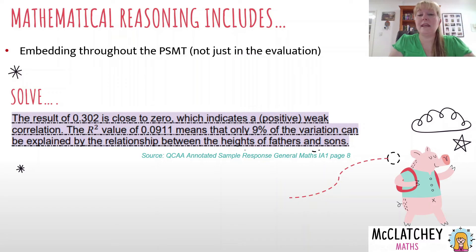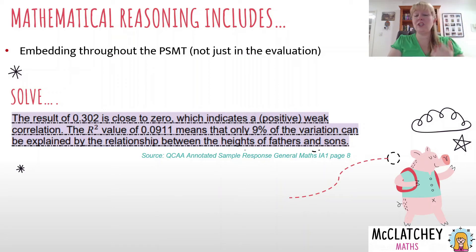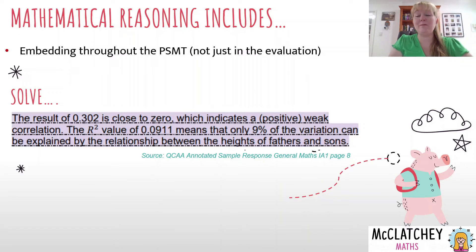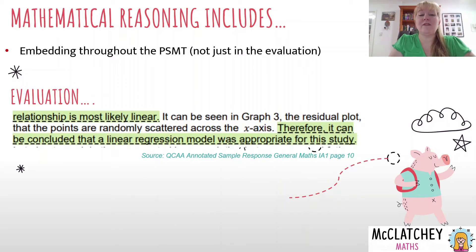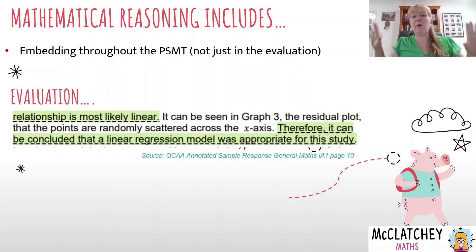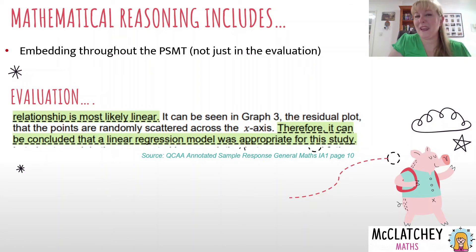You can also make decisions in your solve section. From the QCAA's annotated general maths sample PSMT, they looked at a correlation of 0.302 and used mathematical reasoning to explain why that is weak correlation — because it's close to 0. When you observe results and draw a conclusion, that's a kind of decision, so use mathematics to support it. In the evaluation section, you can also show justification — for example, concluding that a linear model is appropriate because the residual plot has scattered points.